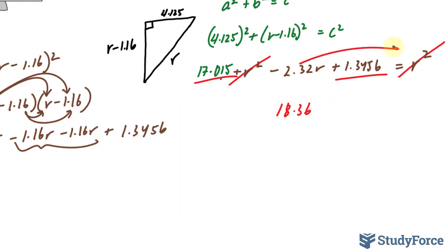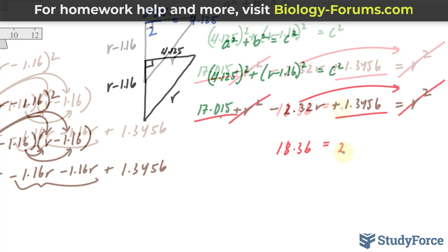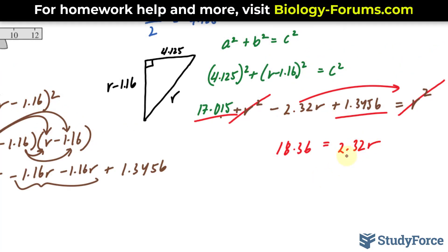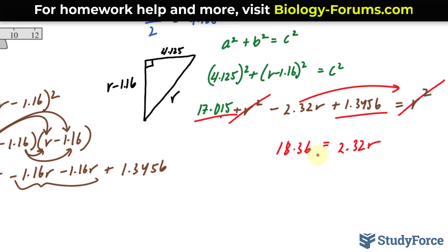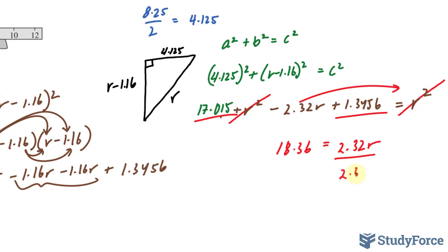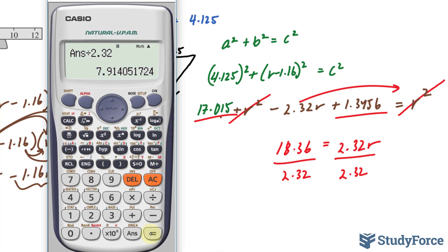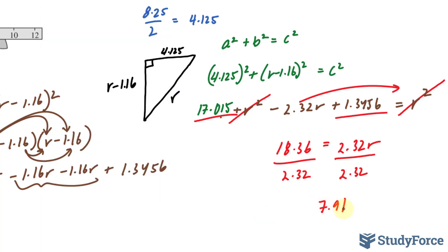Taking this term to the other side, because now we want to find out what r is, 2.32r. Divide both sides by 2.32, and we should end up with our radius. And we get 7.91, 7.91 is our radius.